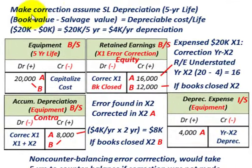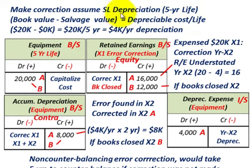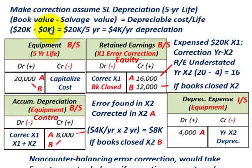Let's look at how we'd make the correction. Assume we used straight-line depreciation with a five-year service life on this piece of equipment. Our depreciable cost is book value minus salvage value — purchase price of $20,000 less zero salvage value — giving a depreciable cost of $20,000. Dividing by the five-year service life gives us $4,000 per year in depreciation.